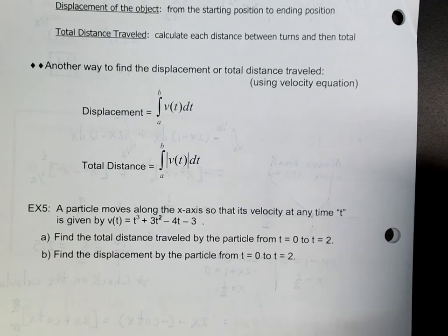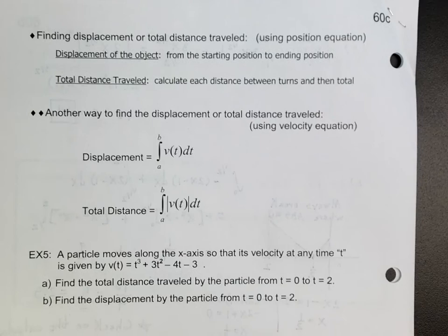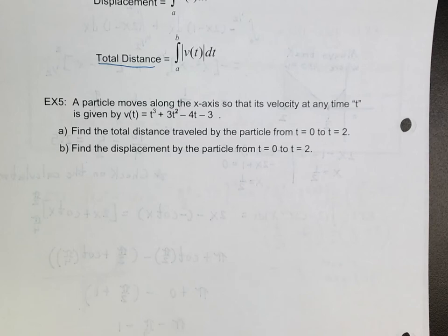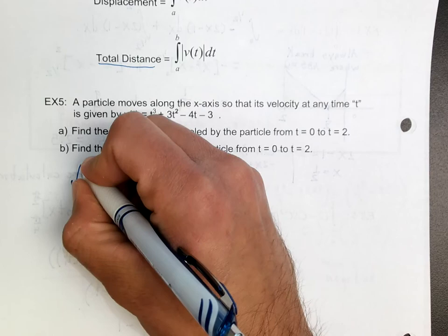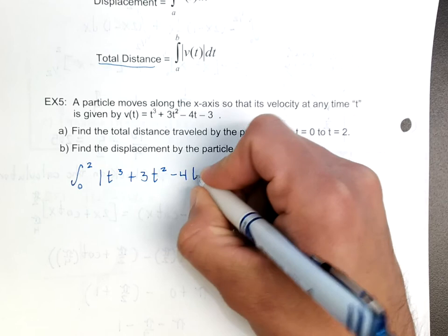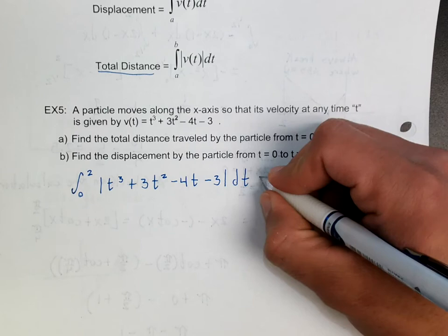Let's go through the back and talk about something we've more or less already discussed. The displacement of an object is the integral of velocity — we already knew that. The total distance, though, is the integral of the absolute value of the velocity. So to find the total distance here, we take the antiderivative of |t³ + 3t² - 4t - 3| dt. I'd recommend using a calculator completely on this — you get approximately 6.831.